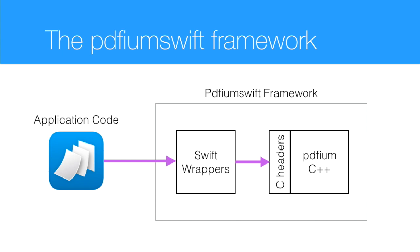The way we organised it was using a framework — a new target inside our workspace which we called PDFEM Swift. This contained all of the PDFEM code we were using and also a bunch of new Swift classes — wrapper objects that went around the C code. These Swift wrappers are a complete wall between the C code and our application code, meaning we don't use any C types or C functions directly in our application, which allows everything to be neatly compartmentalised and improves code quality quite a lot.